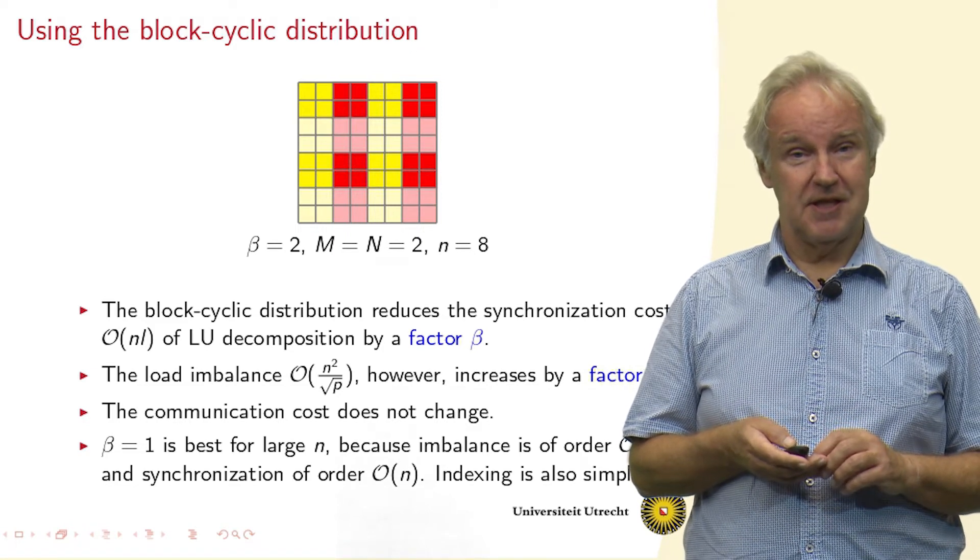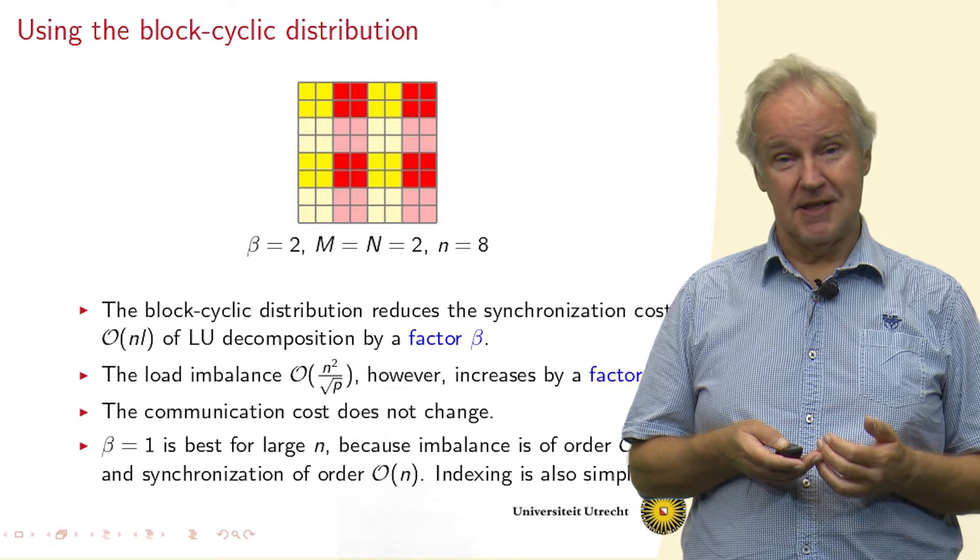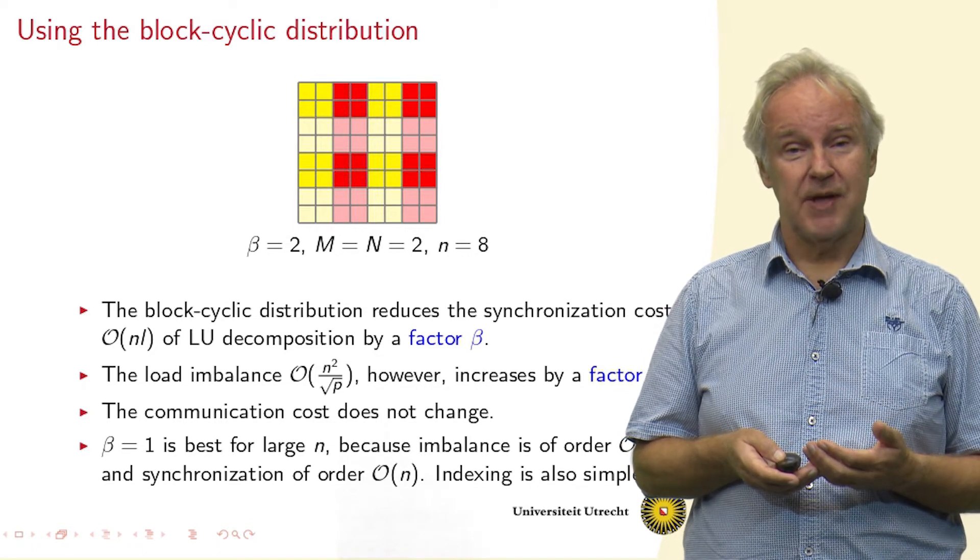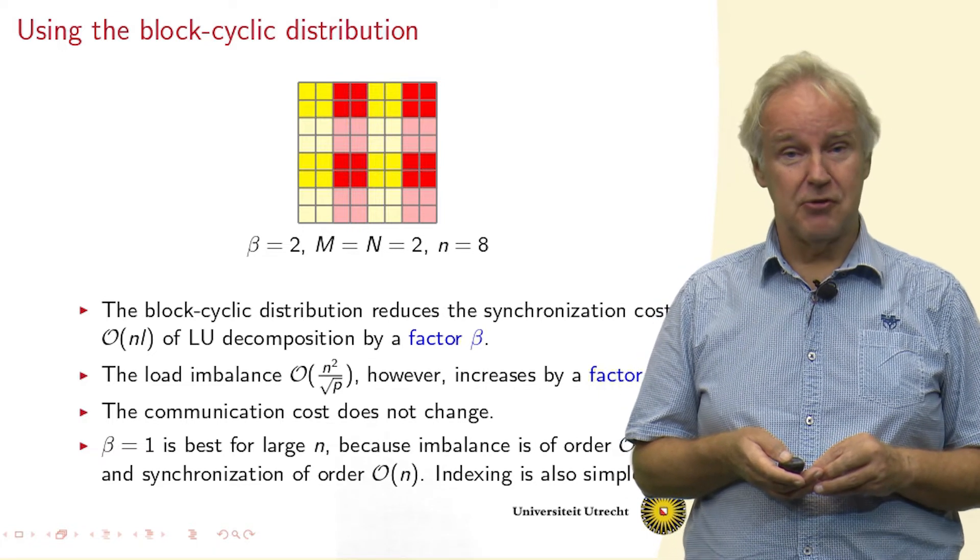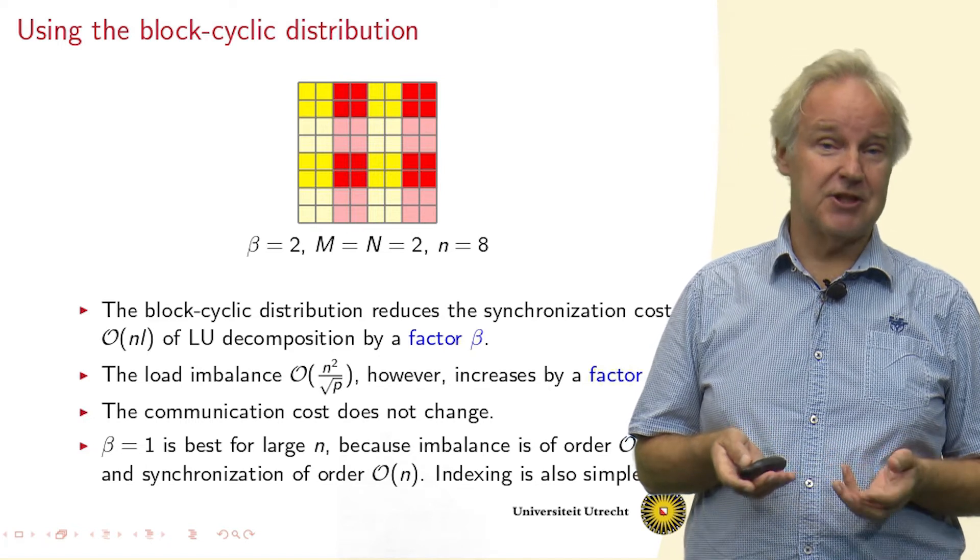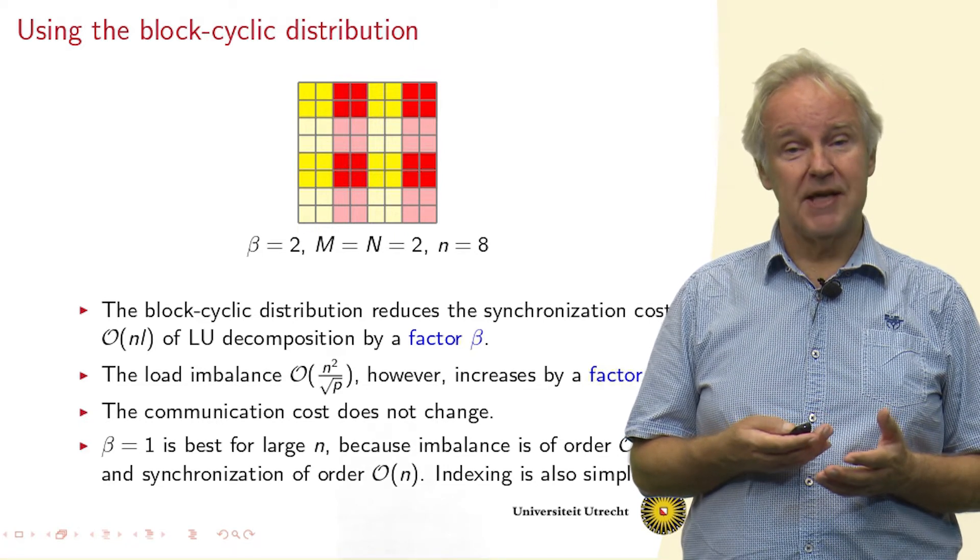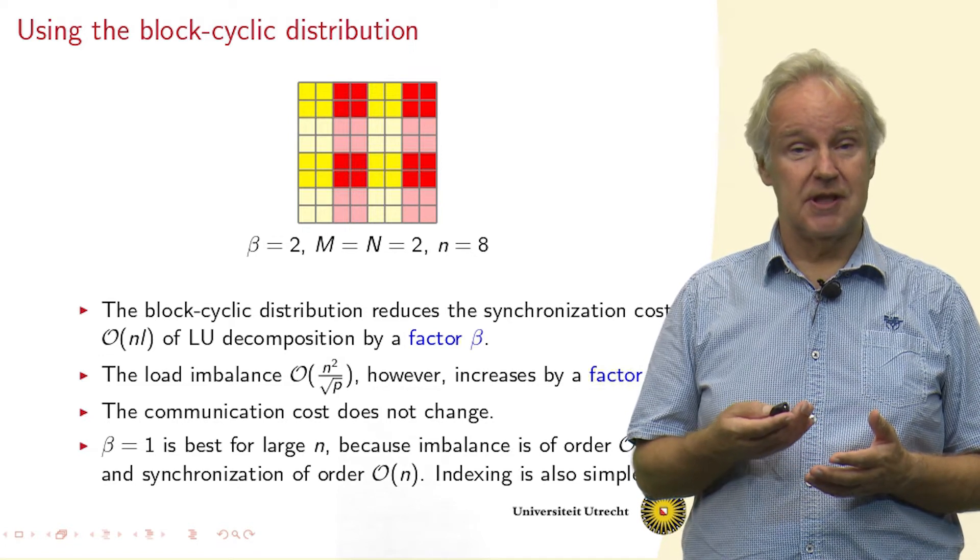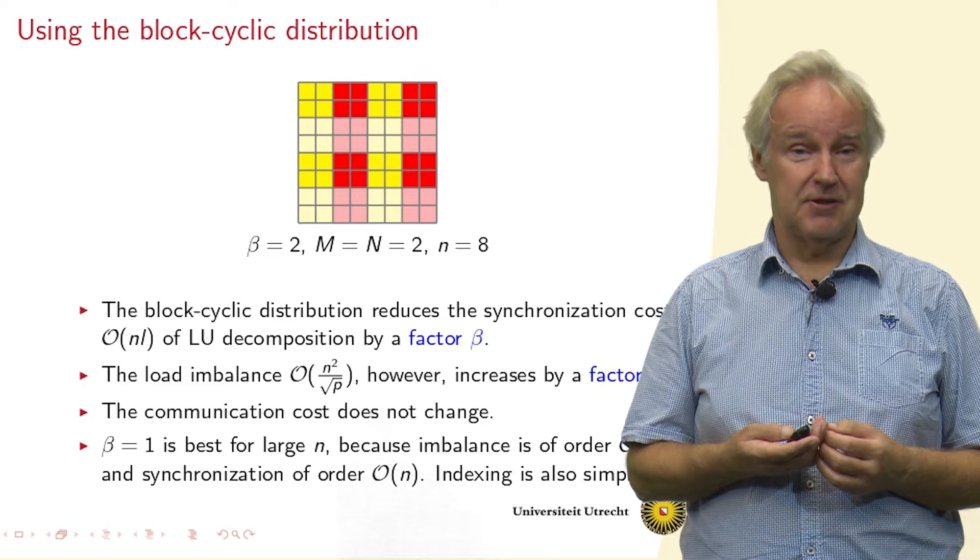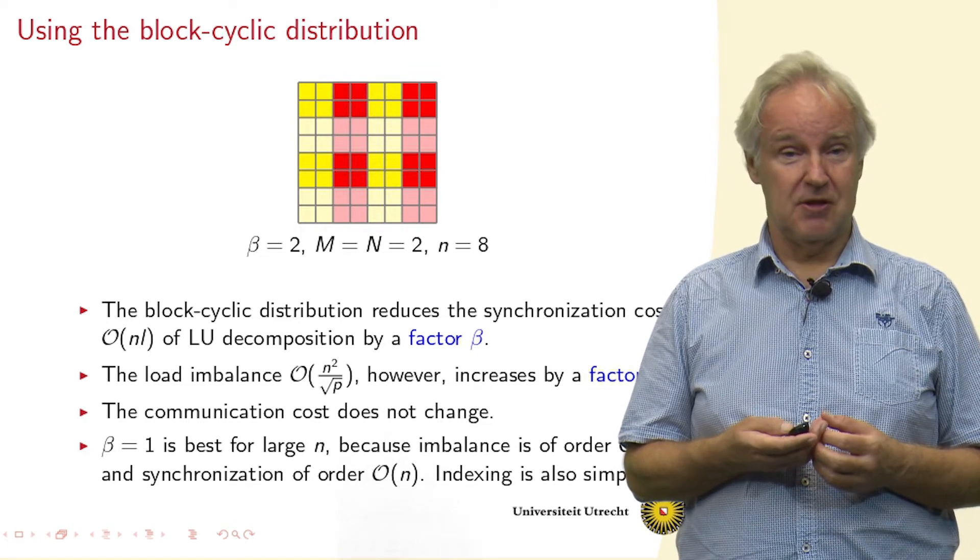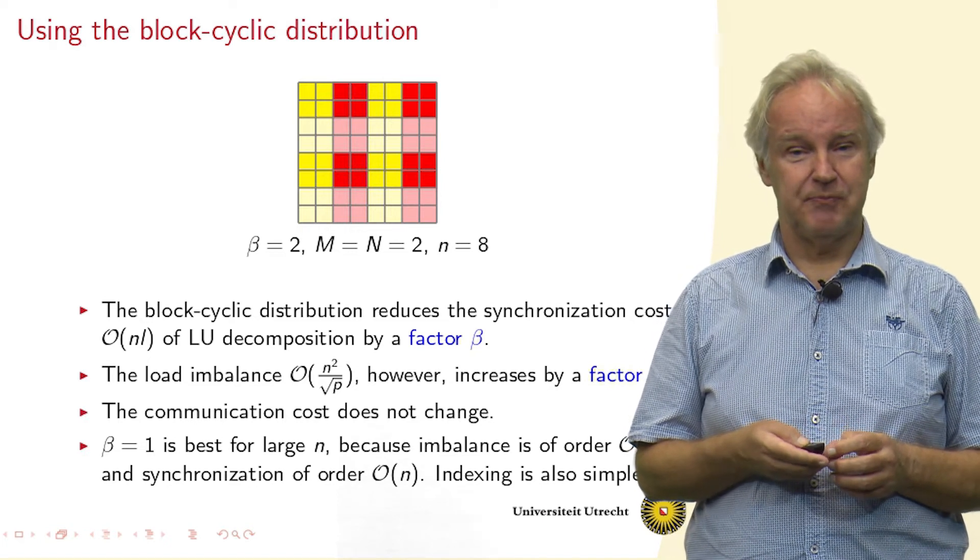The computation is affected because now if you have a little block of β times β, that's a factor of β² more imbalance if you get such an extra block than in the case of single matrix elements. So imbalance deteriorates by a factor of β². And actually, communication doesn't change. The data that you need elsewhere, you still need elsewhere. Then comparing the effect on communication, synchronization, and computation, we see that it is best just to choose β to be equal to 1. Because then you have the best load balance and the deterioration in synchronization doesn't matter that much. So β = 1 is best.